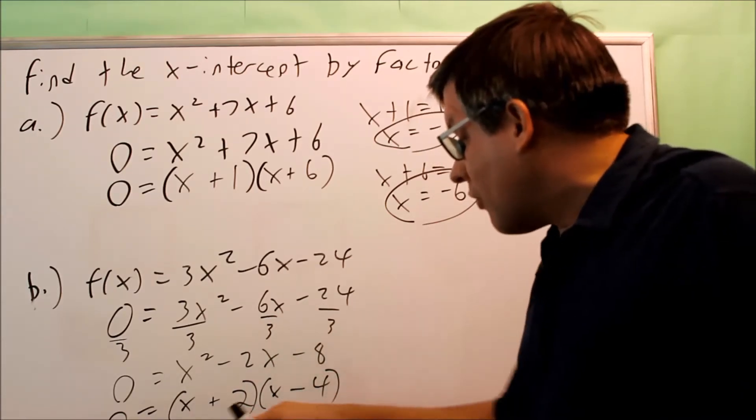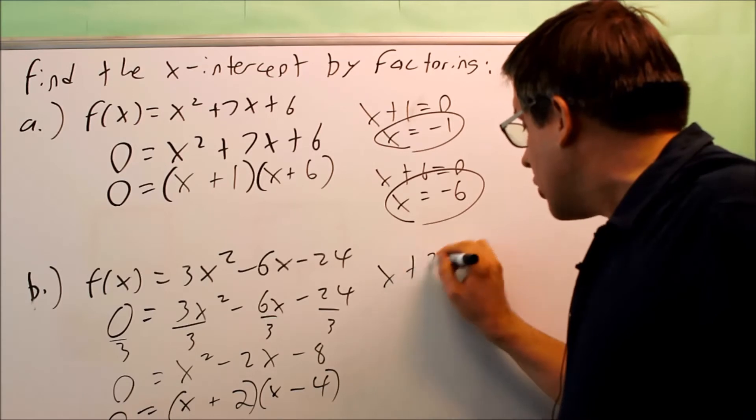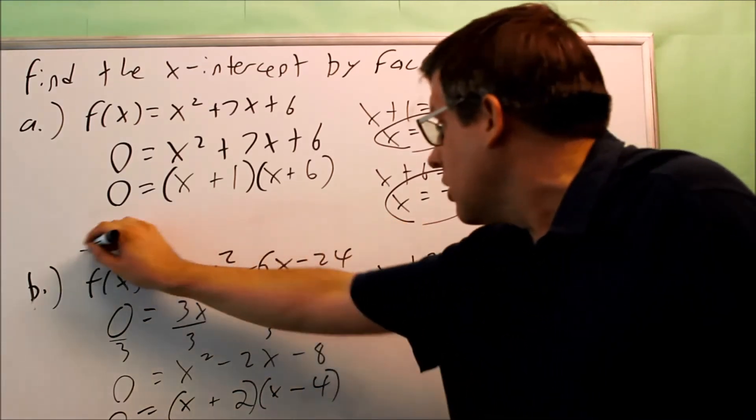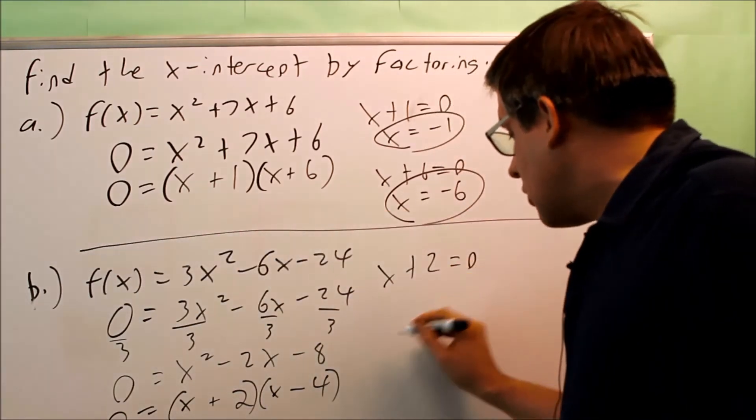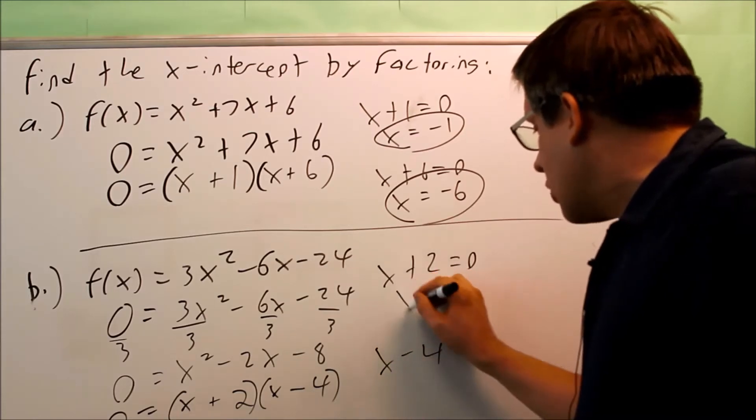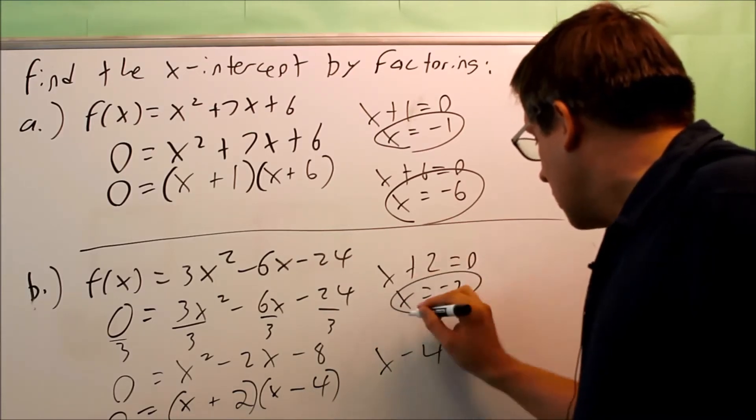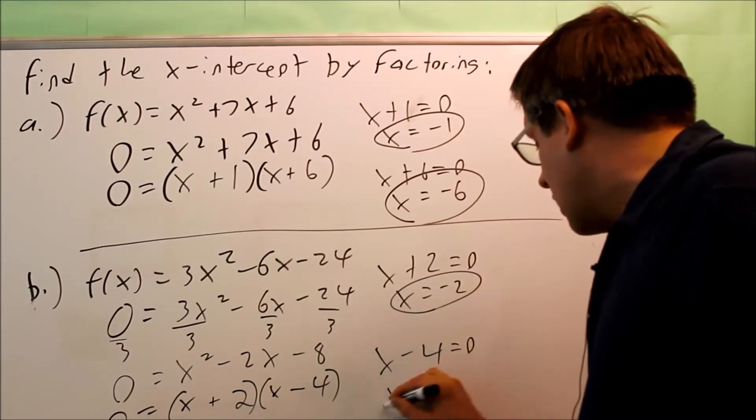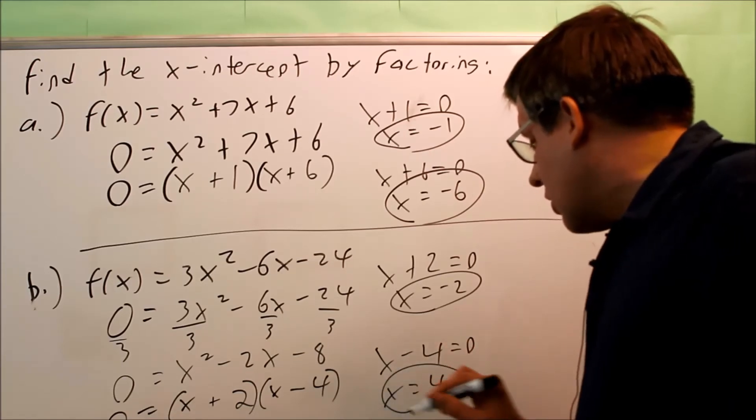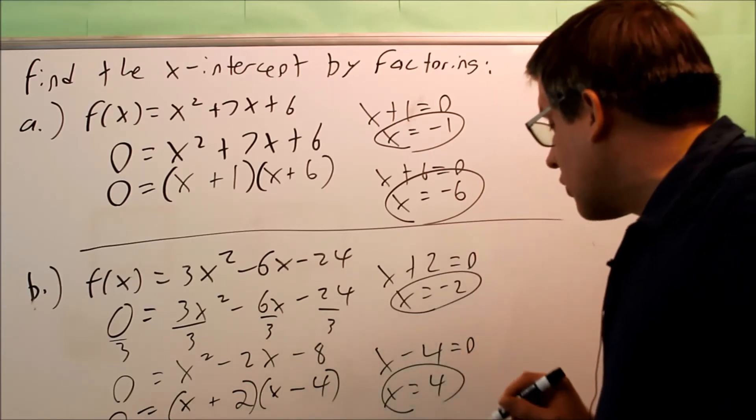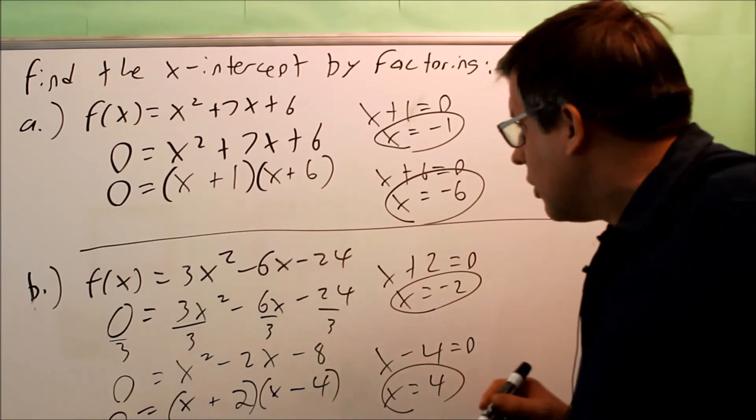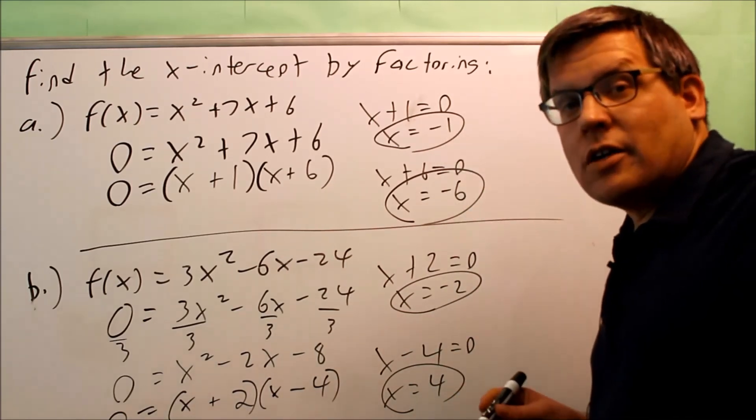So here's the factor form. And again, what you do is you're going to take each of those individually and you're going to set those equal to 0. So for this one, you're going to get negative 2 and this one, you're going to get 4. So I have negative 2 and positive 4 would be the x-intercepts for part b and here's my two answers for part a.